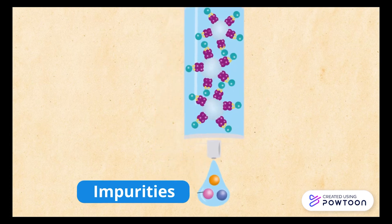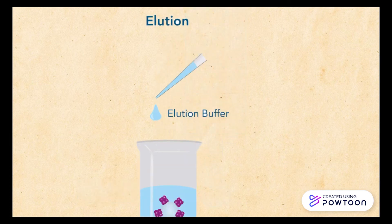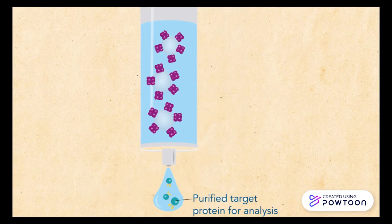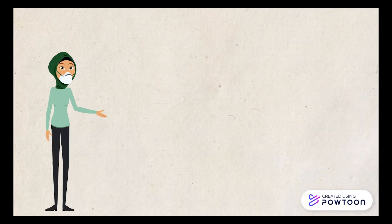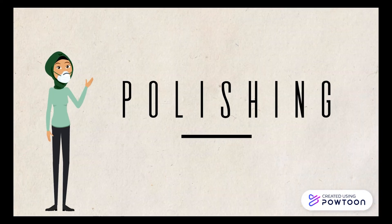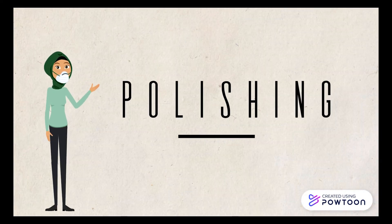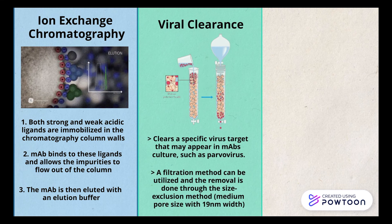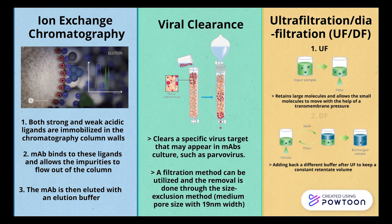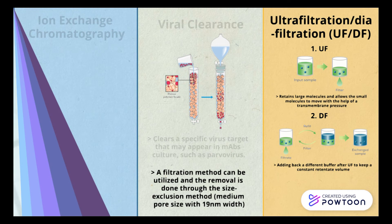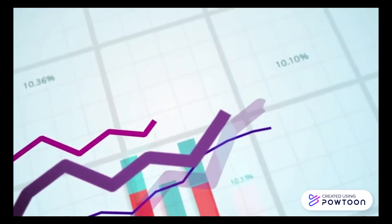The column is then further washed before the monoclonal antibodies are eluted using glycine. In the polishing stage, there are three processes: ion exchange chromatography, viral clearance, and ultrafiltration and diafiltration.